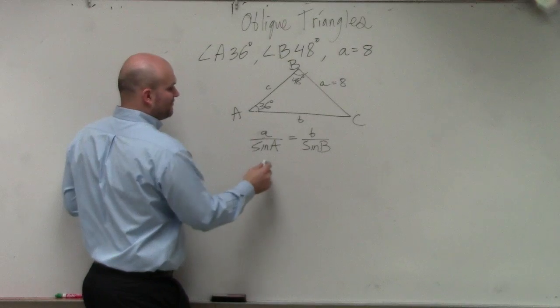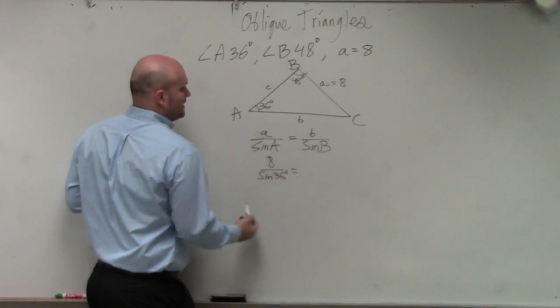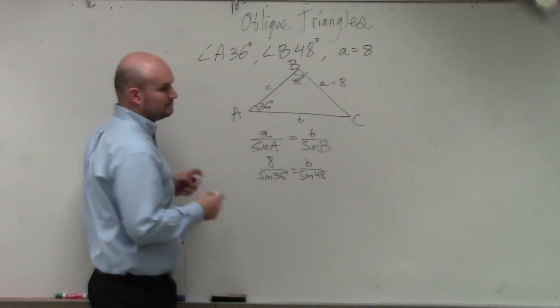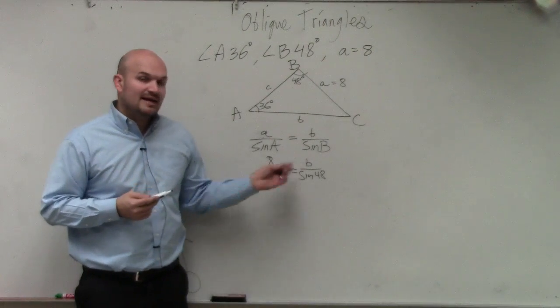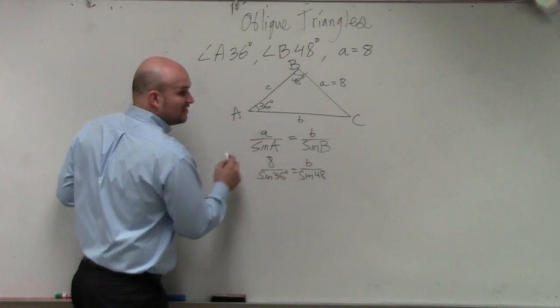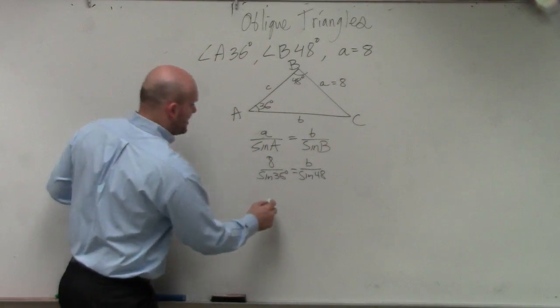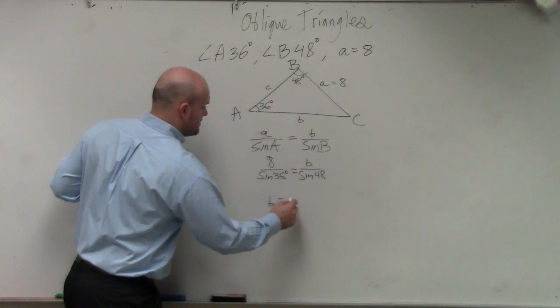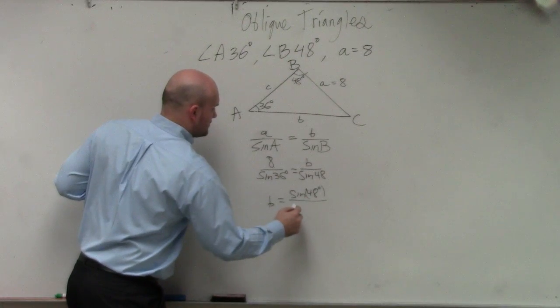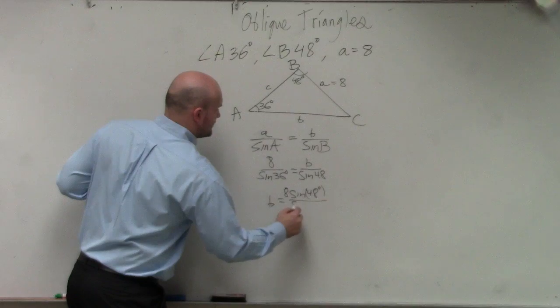So now you just plug in your information. 8 over the sine of 36 equals b over the sine of 48. Now, as I mentioned, I'm going to be solving these kind of a little bit quickly. I'm just going to solve for b. You could do cross multiplication. You could multiply by sine of 48 on both sides. Either way, you get b equals the sine of 48 degrees, sorry, sine of 48 times 8 all over the sine of 36.